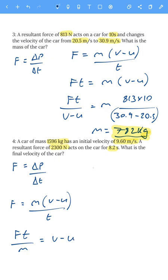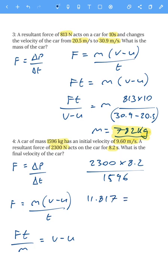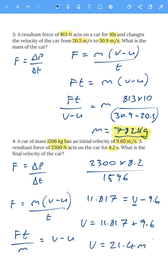Force times time: 2300 times 8.2, divided by the mass of 1596, gives 11.817. That equals the final velocity minus the initial velocity. We want V, so we add the initial velocity of 9.6 to both sides. The final velocity V equals 11.817 plus 9.6, which gives a final velocity of 21.4 meters per second.